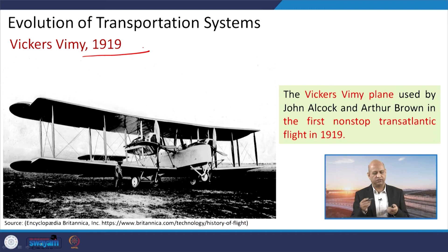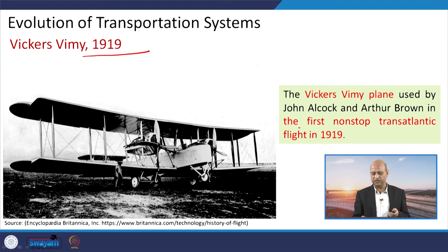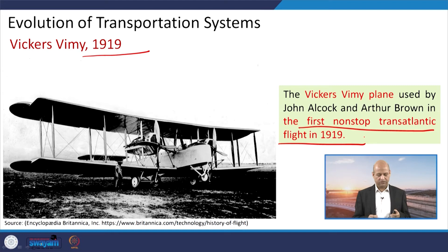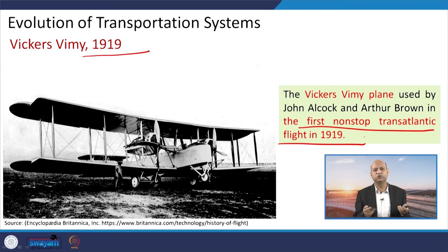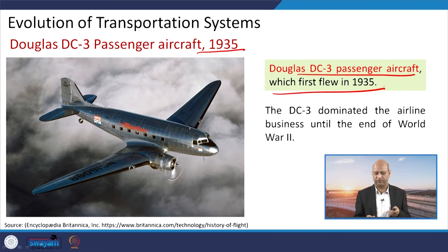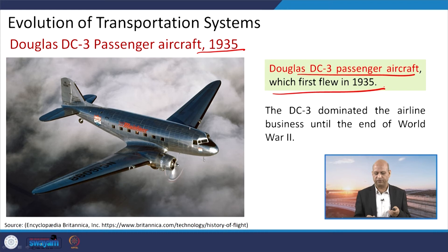In 1919, the first non-stop transatlantic flight took place — big news at that time, showing that aircraft could be used for intercontinental journeys. This was when it started to seem that aircraft could be a new way of transportation from one country to another, in addition to ships. Then in 1935, the Douglas DC-3 passenger aircraft first flew, and this aircraft dominated the airline business up to the end of World War II, where airplanes also played a very important and critical role.